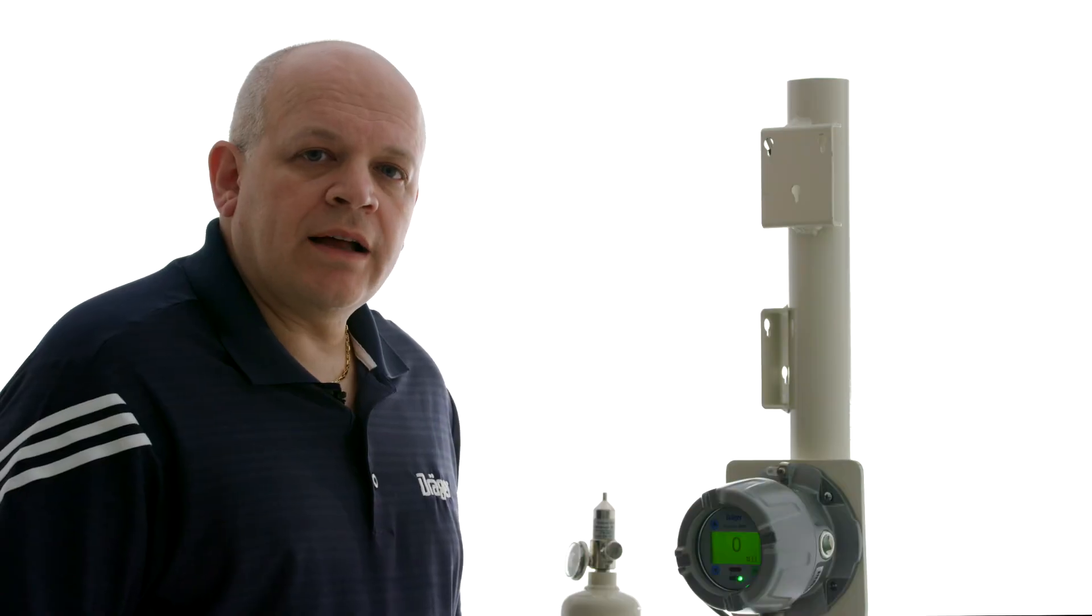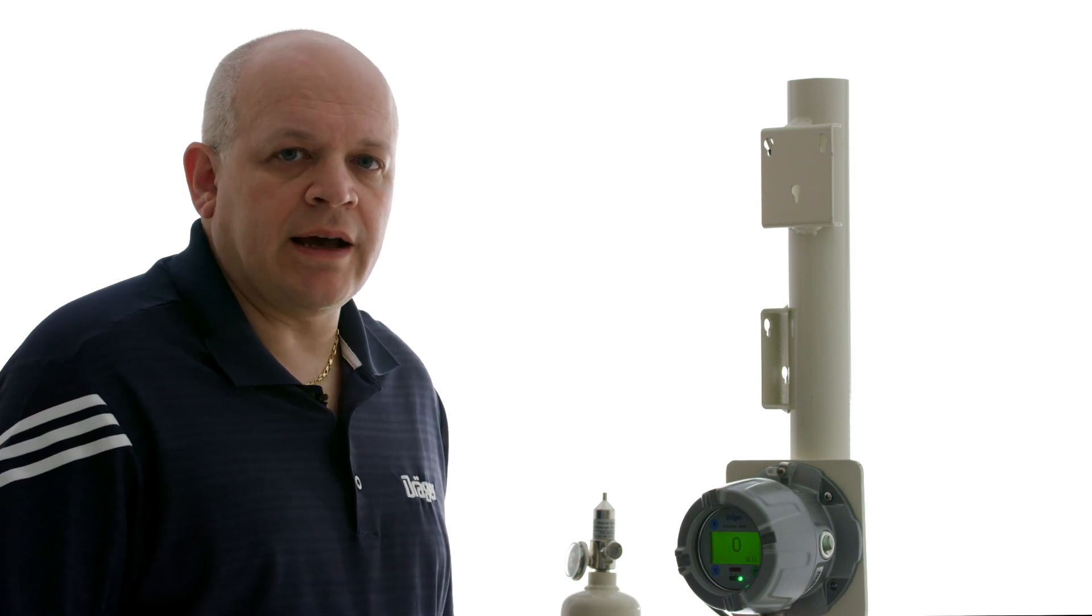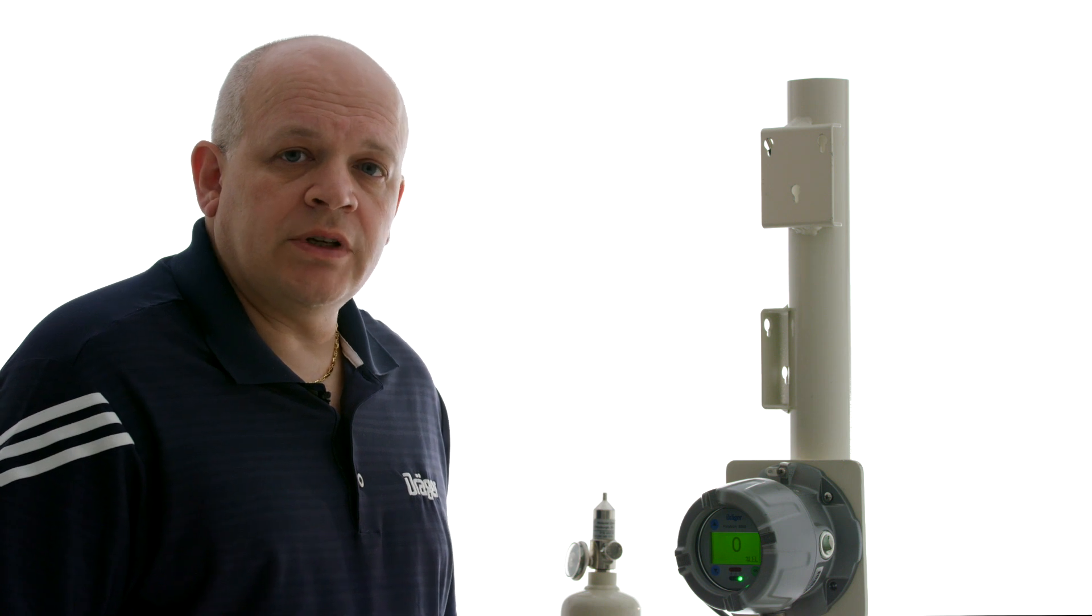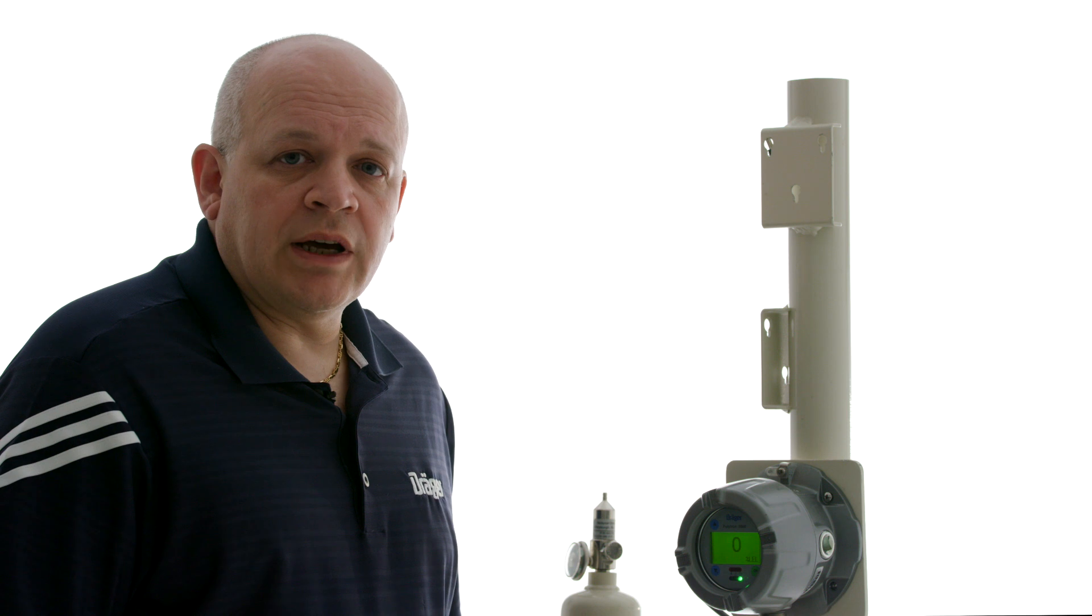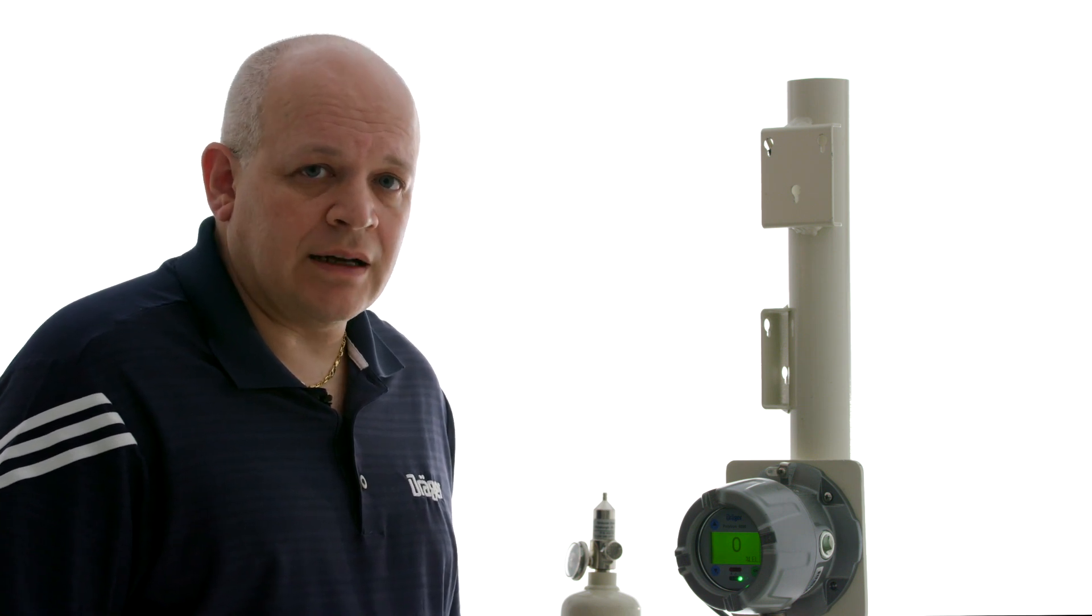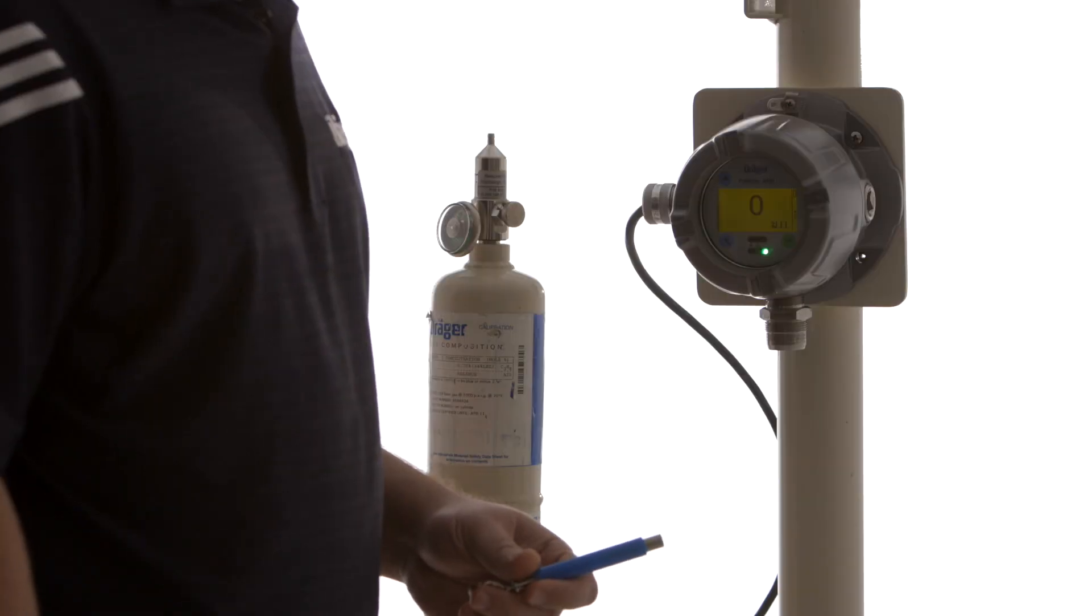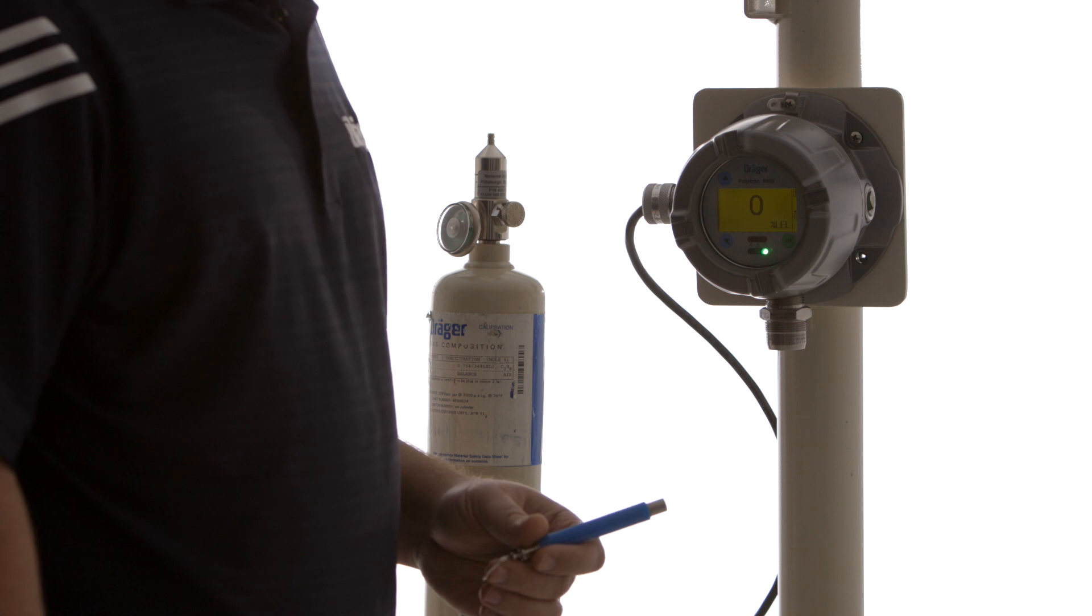In order to calibrate a catalytic bead sensor we must do a zero and span calibration. Make sure for zero that you're using either fresh air or zero air with 20.9% by volume oxygen. You cannot use nitrogen with a catalytic bead sensor. For span gas, the span gas must also be in air, not nitrogen. So we're going to do a zero calibration with fresh air and we'll do our span calibration with propane.